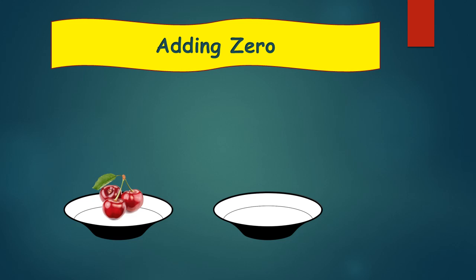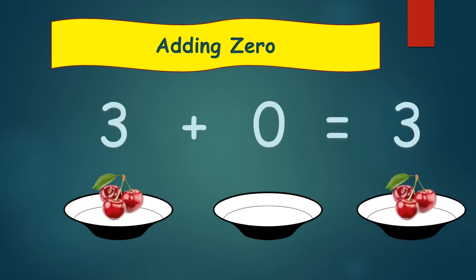We are going to learn to add 0 to any number within 10. There are 3 cherries in the first plate and 0 cherries in the second plate. How many cherries are there in both plates? Here we can say 3 plus 0 equals 3. There are 3 cherries in all. We added 3 with 0 and got the same number, 3.